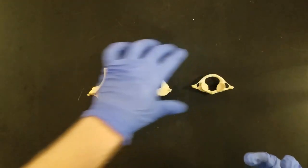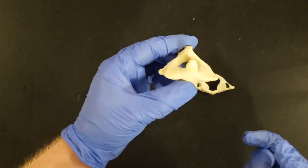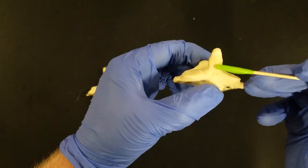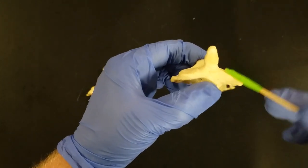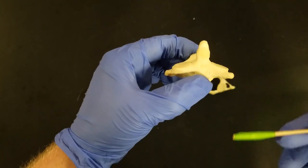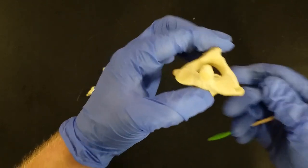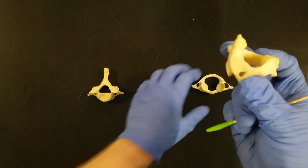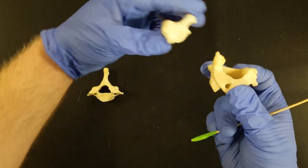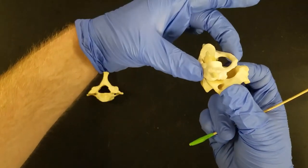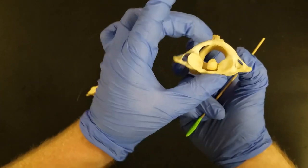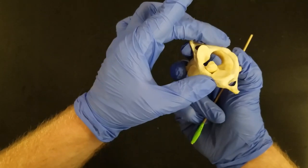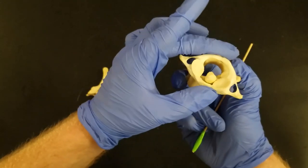Our second cervical vertebrae, C2, is sometimes called axis because it has this superiorly pointing process called the dens. This is actually the body from C1. It fuses onto this vertebrae. Now axis, we can imagine this vertebrae spinning on an axis. So if I take C1 and put it onto the dens, notice how I can take C1 and rotate side to side. This allows you to shake your head in a no gesture.